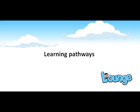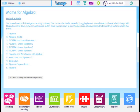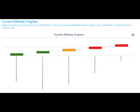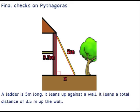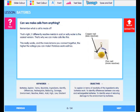Any student, anywhere, anytime — the ethos of the Edlounge learning platform. You can easily create a learning pathway for individual students to access in school or out of school. Each learning pathway is created from a bank of over 5,000 lessons, 250,000 puzzles, quizzes and tests and can lead to exams and qualifications as a final outcome.